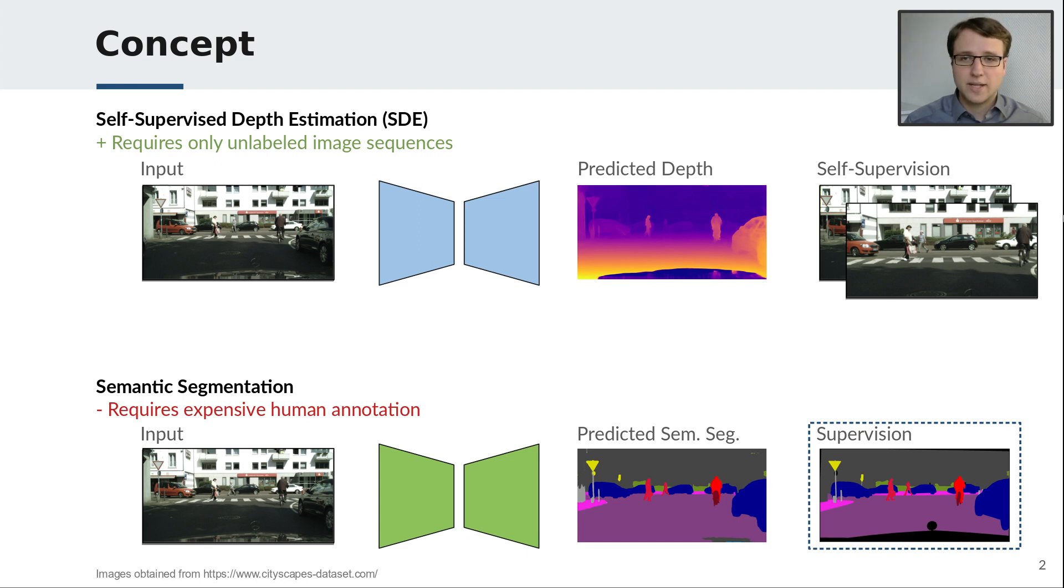These are particularly expensive to acquire. For instance, labeling the semantic segmentation dataset Cityscapes took about 4500 hours of work. In this project, we combine both tasks to utilize the knowledge learned during self-supervised depth estimation to improve the performance of semantic segmentation and reduce the amount of necessary annotations.